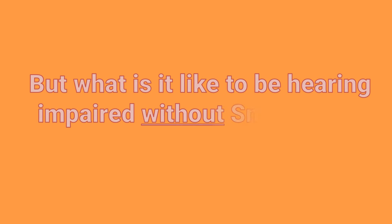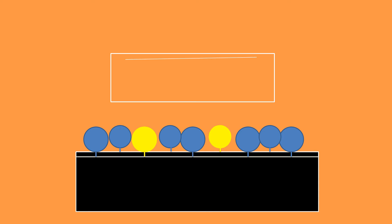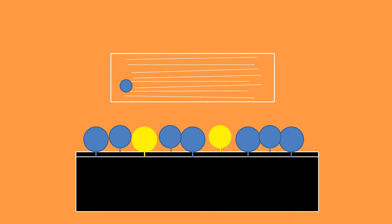But what is it like to be hearing impaired without SmartHear? Here's an example in the form of a lecture. While the professor speaks up front, those that are hearing impaired — the yellow figures — have a hard time hearing. They eventually need to ask the professor to repeat himself.